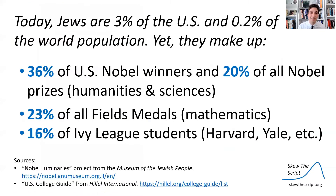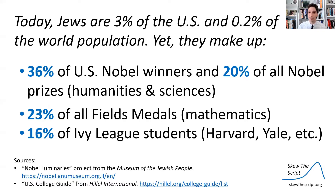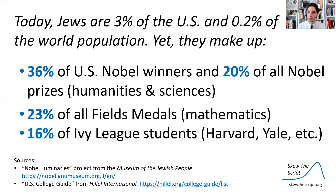I also happen to know these facts and figures. Today, Jews make up 3% of the US population and 0.2% of the world population, yet they make up 36% of US Nobel Prize winners and 20% of all Nobel Prize winners across the world, 23% of Fields Medal winners, and about 16% of Ivy League students at schools like Harvard, Yale, etc. So on these traditional metrics of academic intelligence, there seems to be some over-representation of people from that descent that they found to be mostly moron grade.